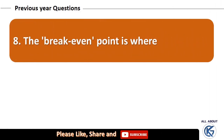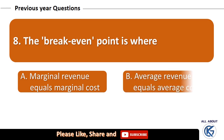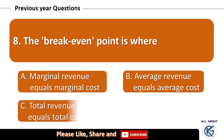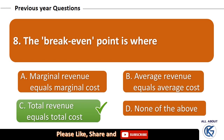The break-even point is where: marginal revenue equals marginal cost, average revenue equals average cost, total revenue equals total cost, or none of the above? The right answer is total revenue equals total cost.